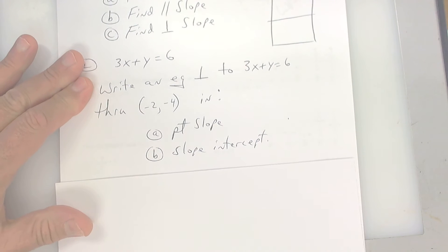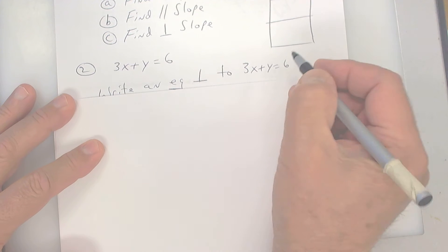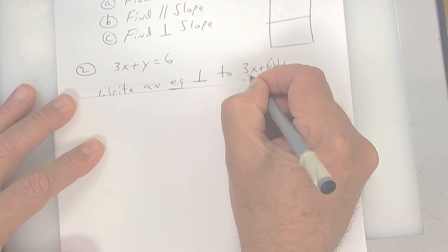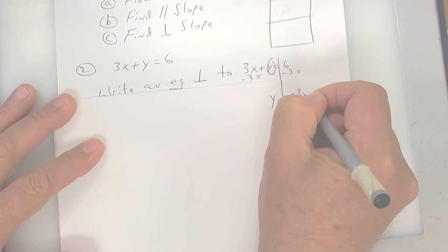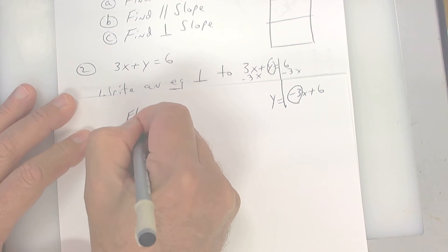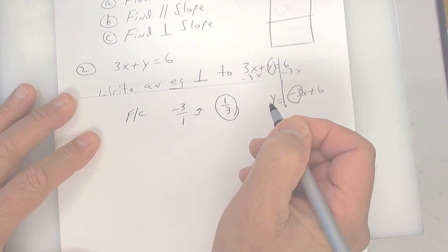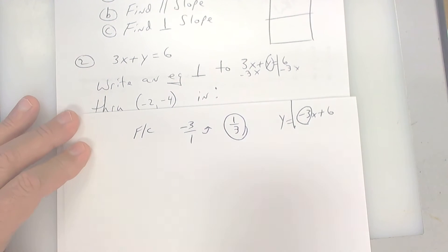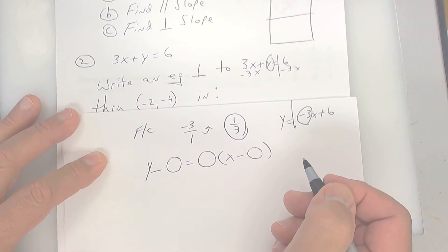This one right here wants to know an equation perpendicular. All right, so you've got to take this one. You've got to get y by itself. So you're going to subtract 3x from both sides, and you're going to get y equals this. This is your slope. But we want perpendicular, so put negative 3 over 1, and then flip it and change it. So when you do, you get that. Now let's use point slope. Point slope is y minus some y equals your slope, and then x minus some x. Copy that down.